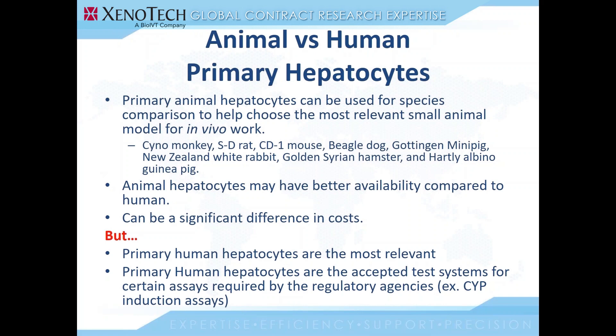For instance, the Cynomolgus monkey, the SD rat, the CD1 mouse, and Beagle dog are very common small animal models for comparison with humans. These will help scientists choose the appropriate small animal models for in vivo work, and they generally have good — if not better — availability than human. And there is a significant cost difference.